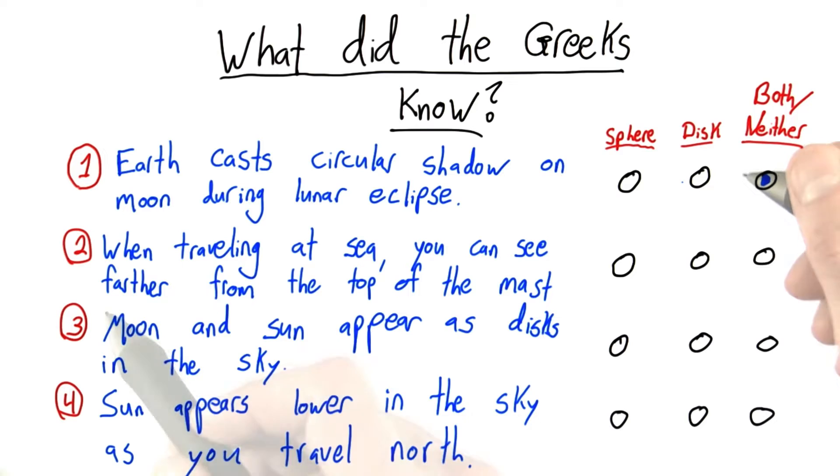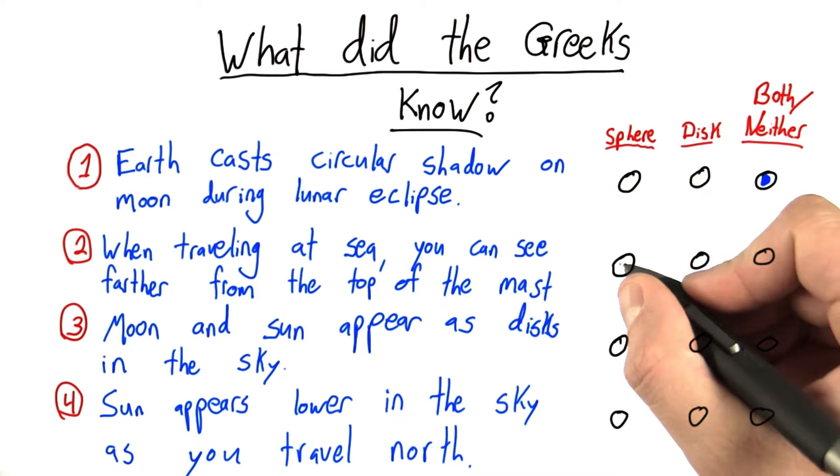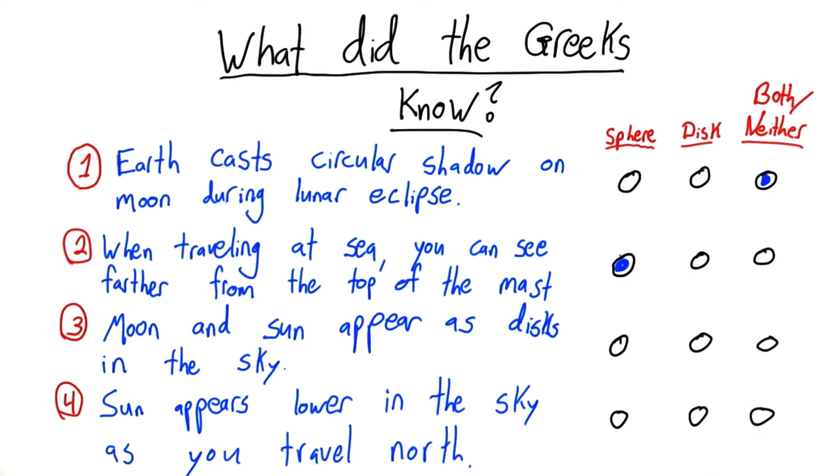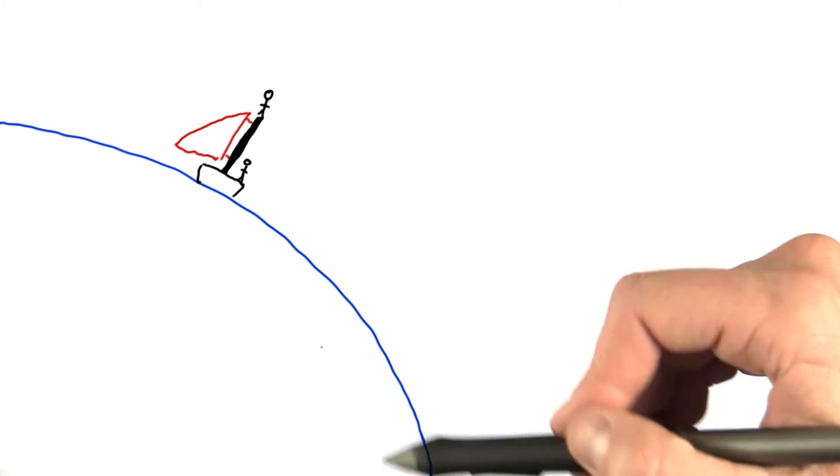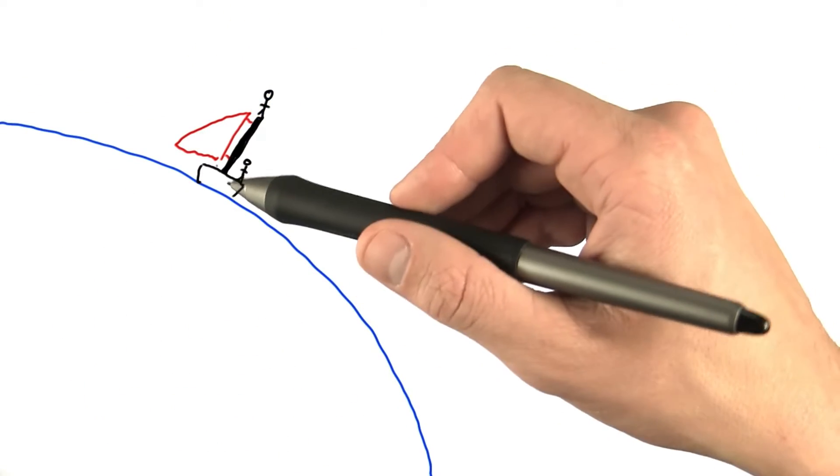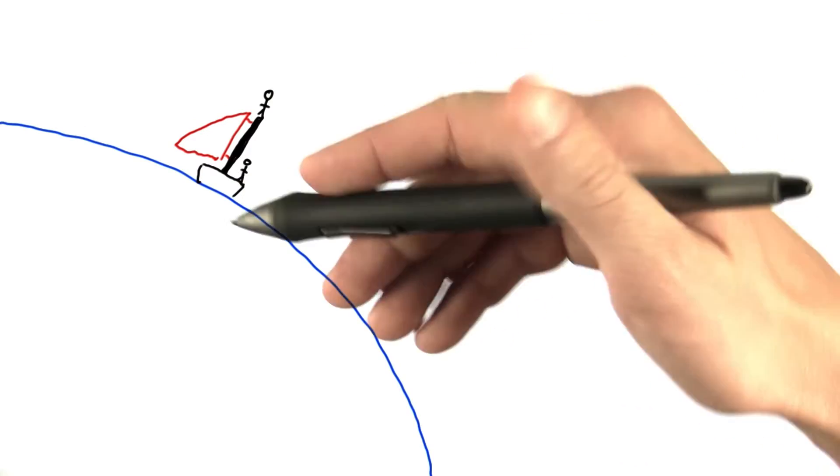For the second point, when traveling at sea, you can see farther from the top of the mast. I said this definitely points to the Earth being a sphere. And let's think about why. So here's my zoomed-in drawing of a portion of the Earth, and here's a boat, an exaggerated boat. It's much larger than any actual boat on the Earth would be, but that's okay.